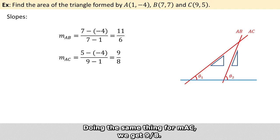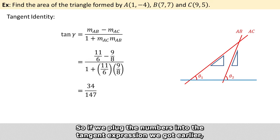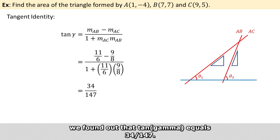Doing the same thing for m_AC, we get 9 over 8. So if we plug the numbers into the tangent expression we got earlier, we found out that the tangent of gamma equals 34 over 147.